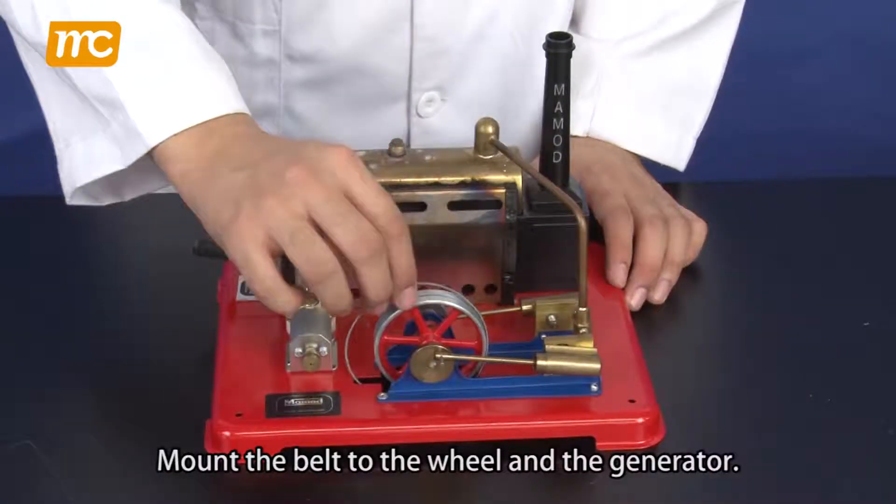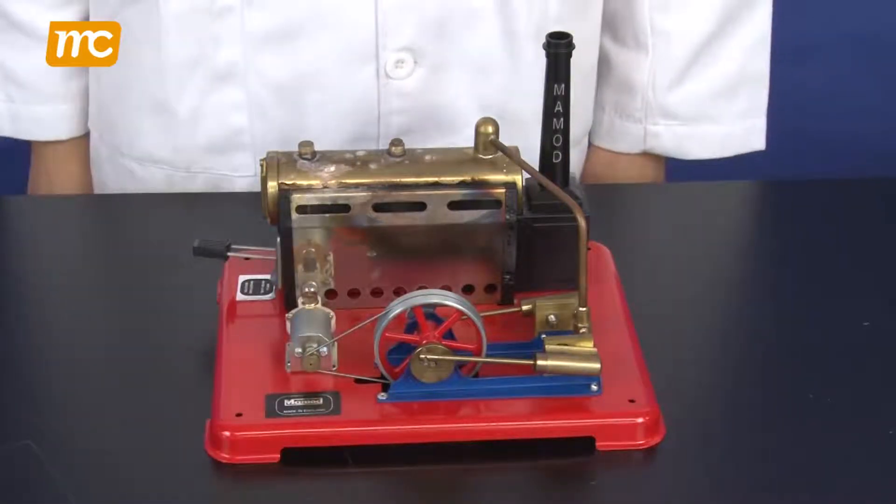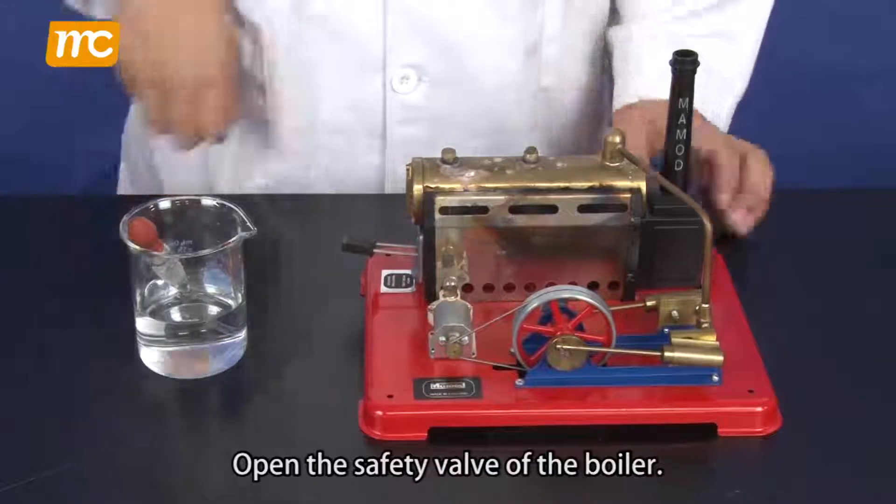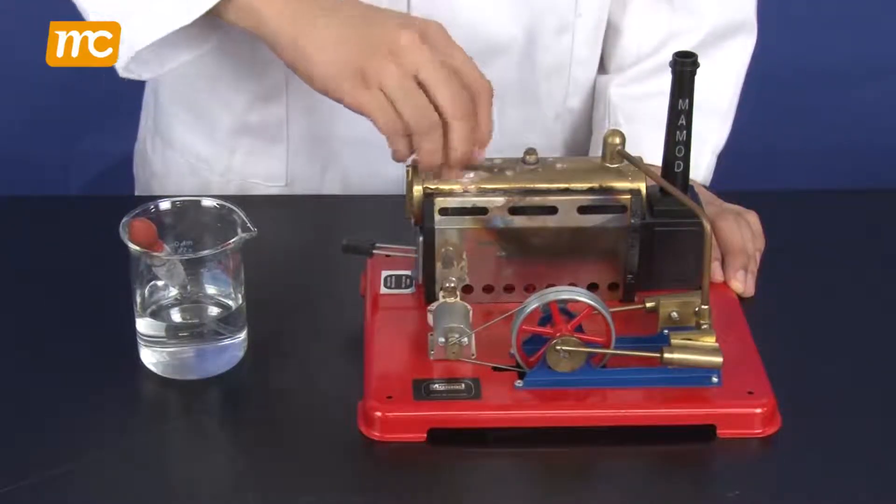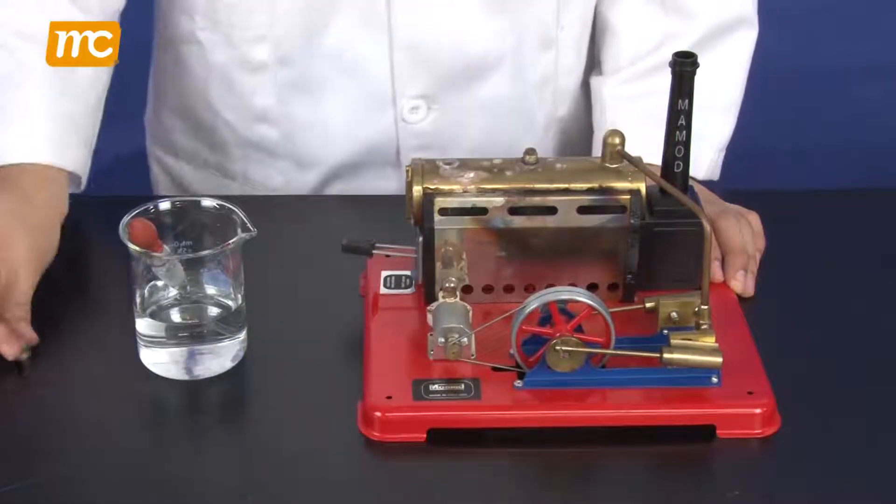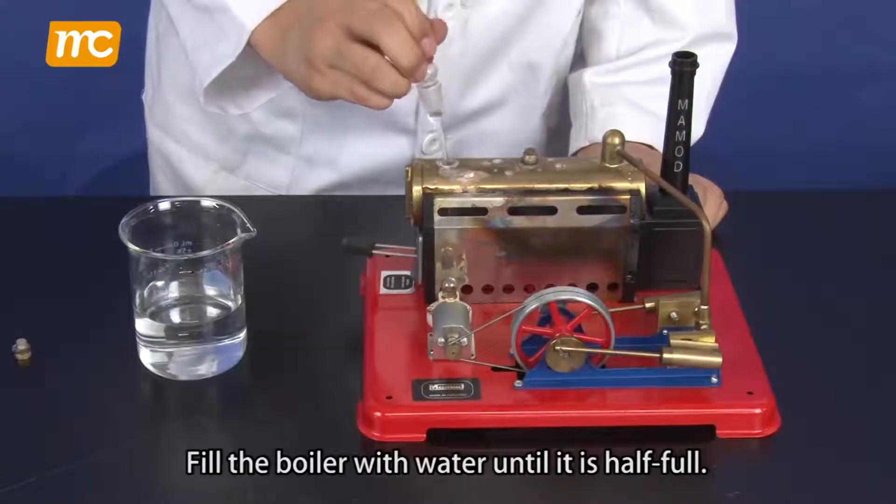Mount the belt to the wheel and the generator. Open the safety valve of the boiler. Fill the boiler with water until it is half full.